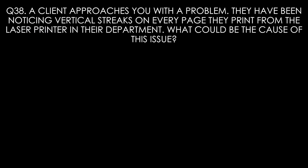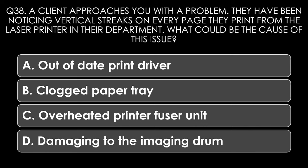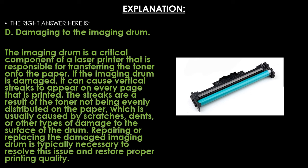Question thirty-eight. A client has noticed vertical streaks on every page printed from the laser printer in their department. What could be the cause? Options: out-of-date printer driver, blocked paper tray, overheated printer fuser unit, or damage to the imaging drum. The right answer is damage to the imaging drum. The imaging drum is a critical component responsible for transferring toner onto paper. If damaged, it causes vertical streaks because toner is not evenly distributed — typically caused by scratches, dents, or other surface damage. Repairing or replacing the drum is necessary to restore proper print quality.